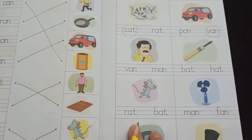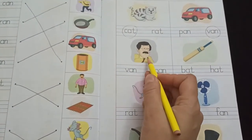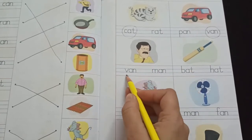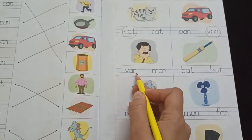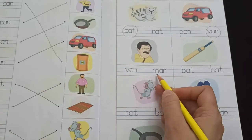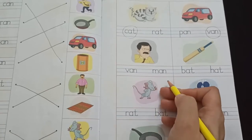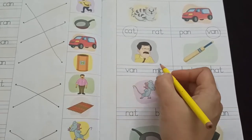Now the next picture is of a man. Man. V-A-N, van. M-A-N, man. So, which one is correct? Man.